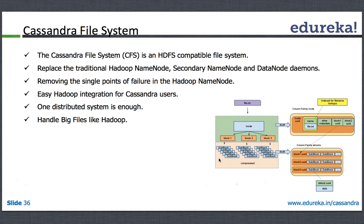Looking at the diagram here, all this inode information keeps information about the blocks and sub-blocks, and these are basically compressed. So if your file.txt is there, it basically has an inode and then it has subsequent blocks and sub-blocks.